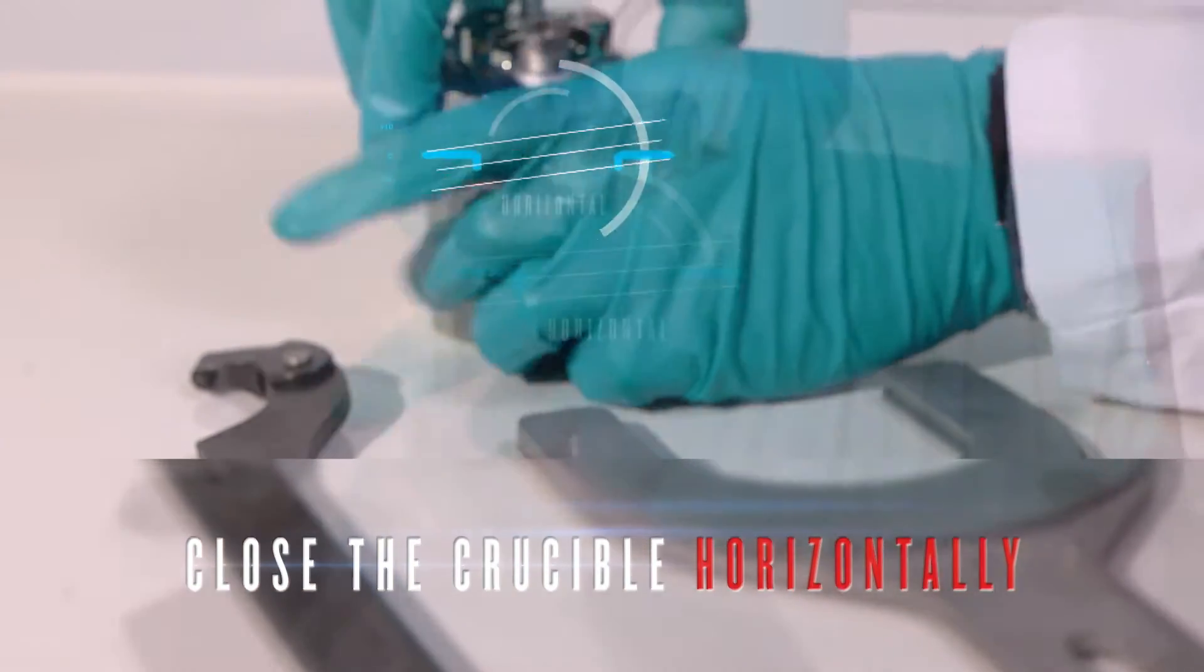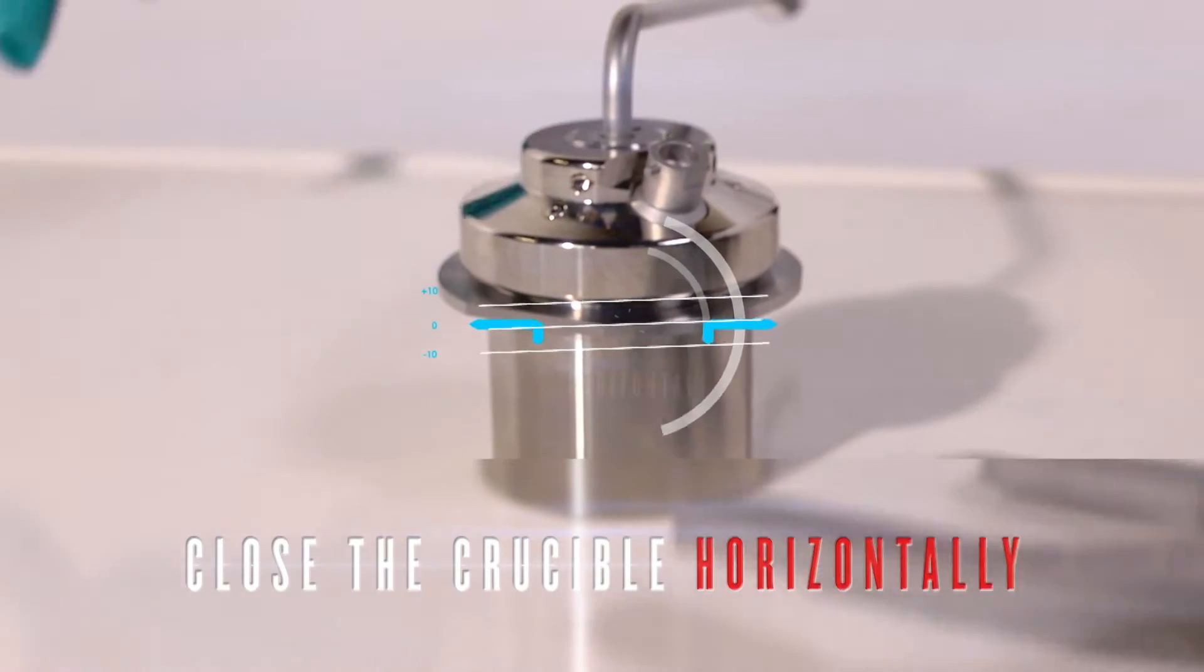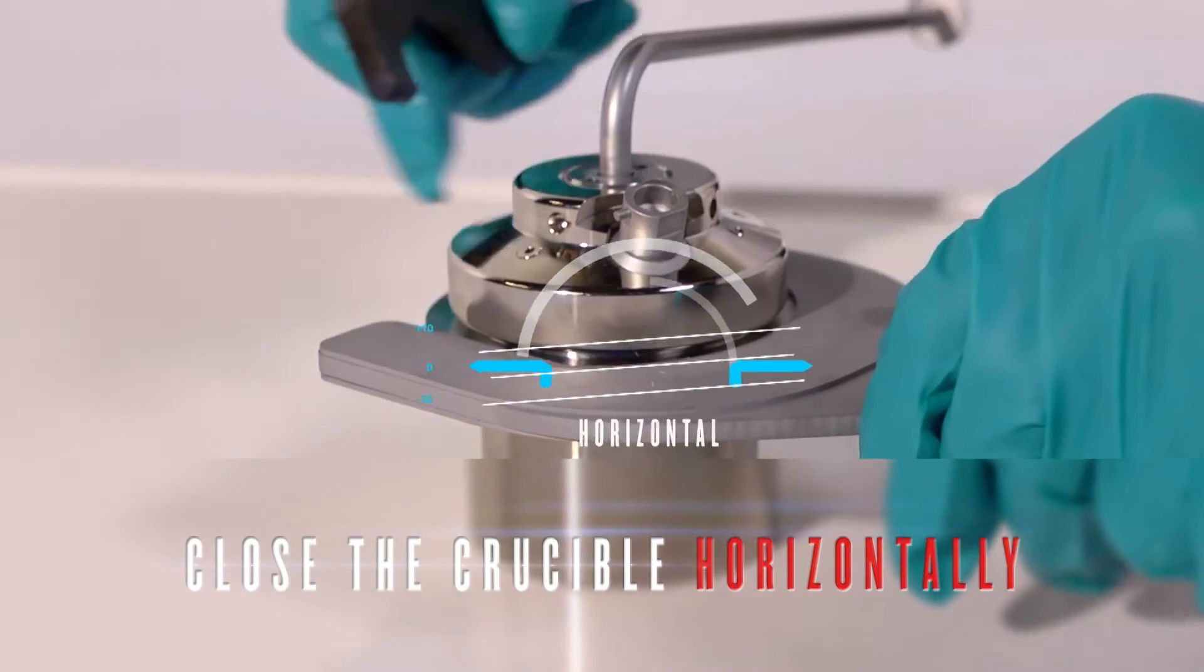Screw the crucible cover tightly using the clamp and the spanner. During this step, make sure the sample liquid does not splash on the inside part of the cover.